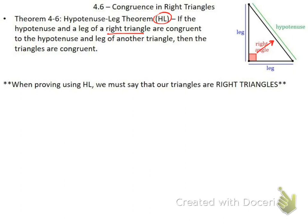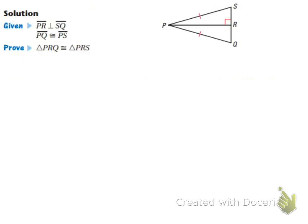One thing that's a little different about hypotenuse leg is that there are only two things you need to prove congruent: the hypotenuse is congruent and the leg is congruent. You also have to state that the triangles are right triangles. Hypotenuse leg can be tricky because you won't know you're using it until the end of the proof, when you have an angle and two sides where the angle is not between them — that would be angle-side-side, which we can't do, so that's the hint to use hypotenuse leg.